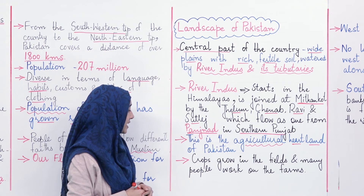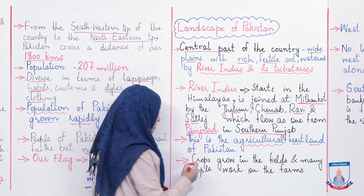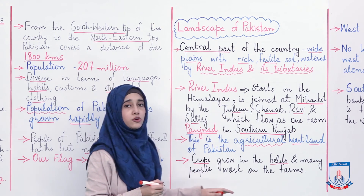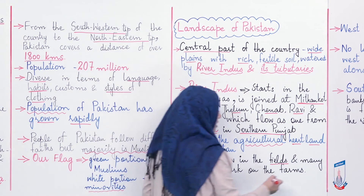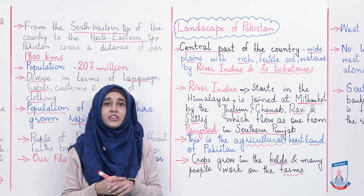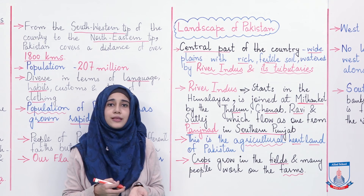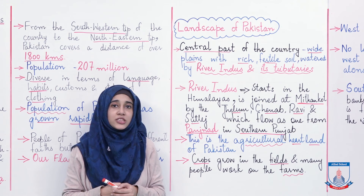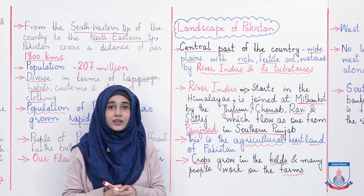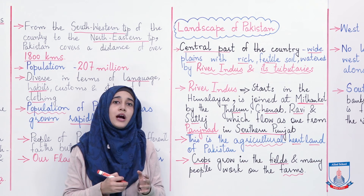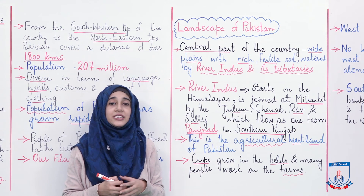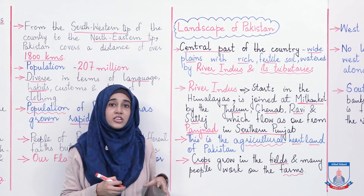Crops grow in the fields and many people work on the farms. Yaani ke faslen kheton mein ughti hain aur bahut se log farms par kaam karte hain. Bachon aap ne yeh baat yaad rakhni hai ke hamaari country ek agricultural country hai. Agricultural country hone ka kya matlab hai — ke humaare mulk mein jo zyada tadaad mein kaam kiya jaata hai woh agriculture ka kiya jaata hai: kheti baari, faslen ugaana, janwar rakhna. Toh hamaari country as an agricultural country famous hai.